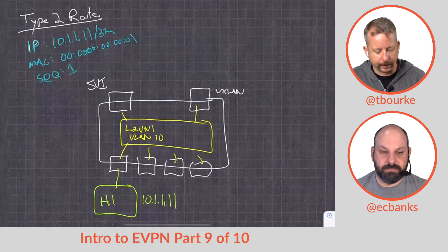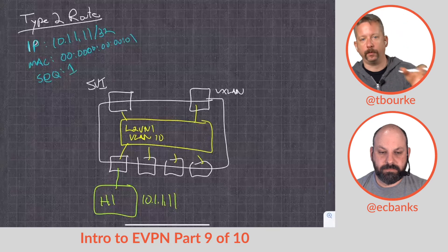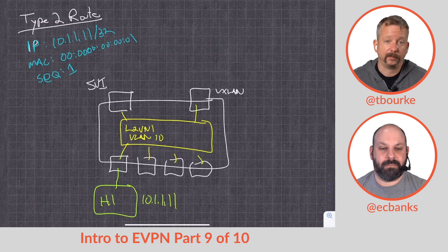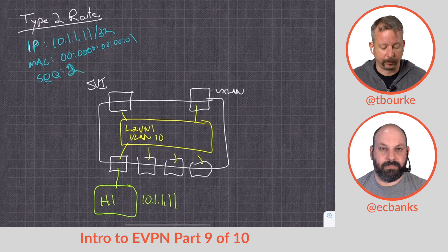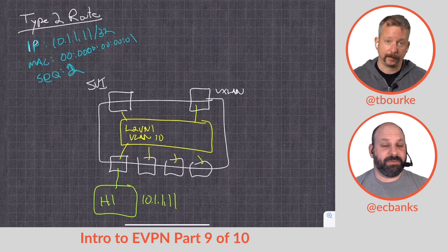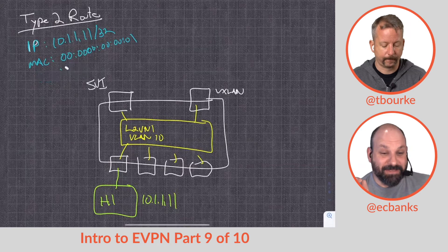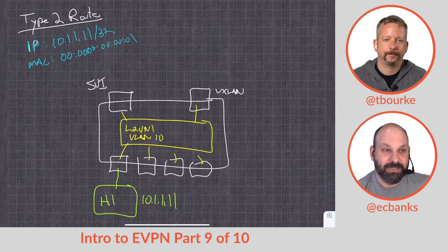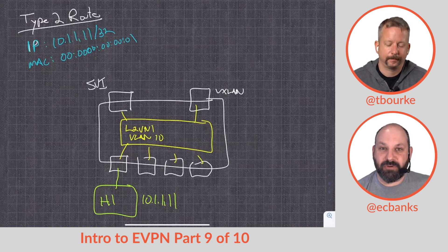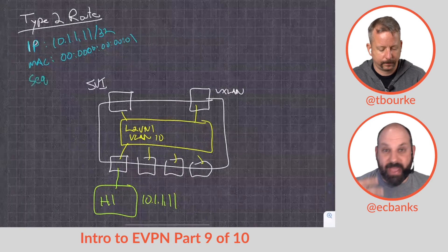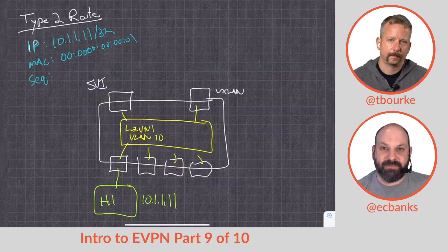The sequence number is used for vMotion. If a VM or host moves to another leaf, that leaf will generate this route but already knows where it is — somewhere else — so it knows a vMotion has occurred. It generates the route with a higher incremented sequence number. There was a question: is the Type 2 route with that metadata specifically written into the standard for vMotion, or is the sequence number general-purpose?